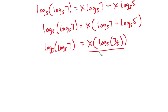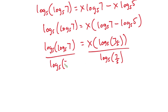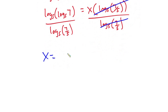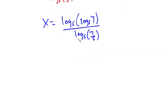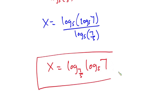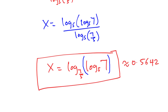Now, dividing both sides by log base 5 of (7/5), we get x equals log base 5 of log base 5 of 7 divided by log base 5 of (7/5). You can leave your answer in this form, or rewrite it as x equals log base (7/5) of [log base 5 of 7]. This is our final answer. Typing this into a calculator gives approximately 0.5642. I hope you found this video useful — please give it a thumbs up, subscribe, have a nice day, and see you in the next video.